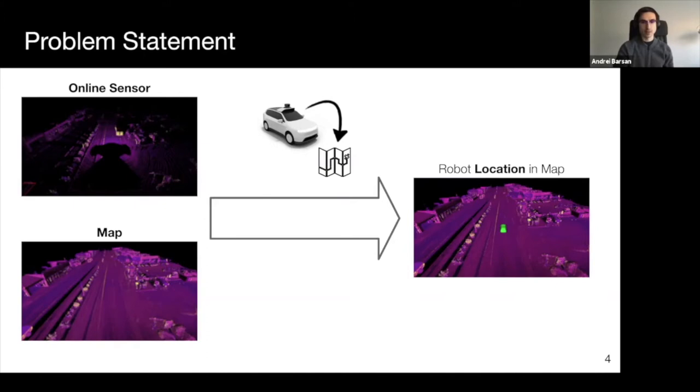Formally, we wish to model the robot's belief over its state space, where for localization, the state space typically corresponds to the robot's pose within the world. We denote the pose at the current time as XT, the observations as Z ranging from 1 to T, and we denote our prior pre-built map as M.